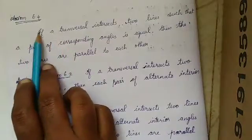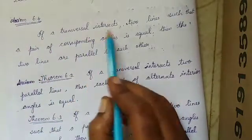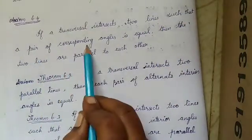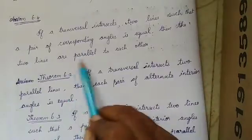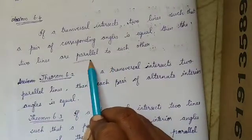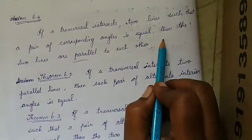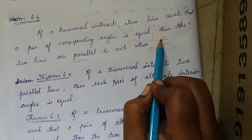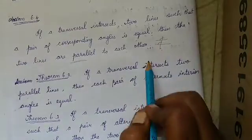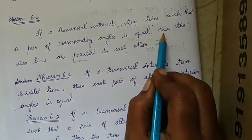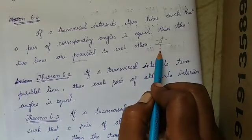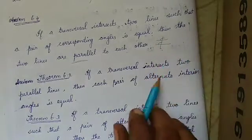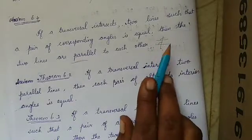Axiom 6.4: if a transversal intersects two lines such that the corresponding angles are equal, then those lines must be parallel. If a transversal line passes through two lines and corresponding angles are equal, it is automatically understood that these two lines are parallel. Both ways, we can say the same statement.